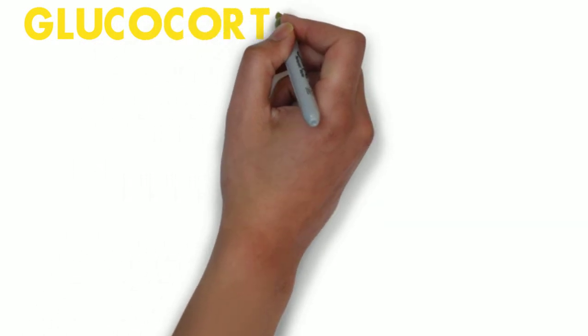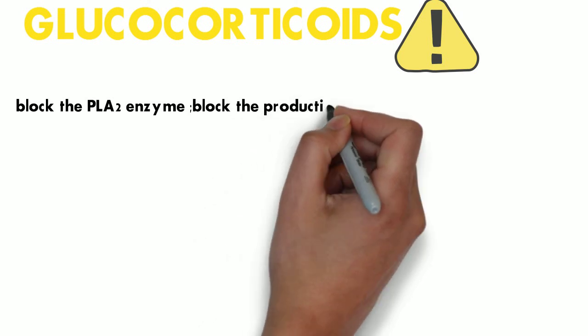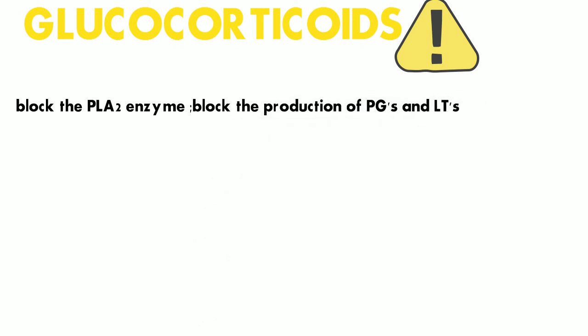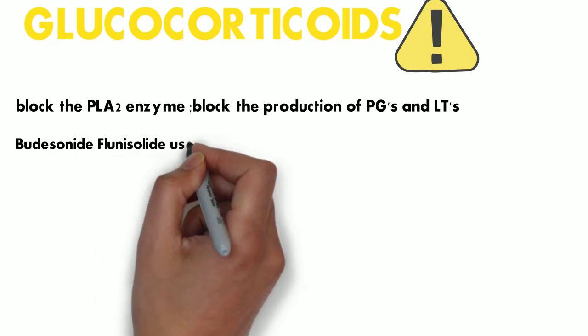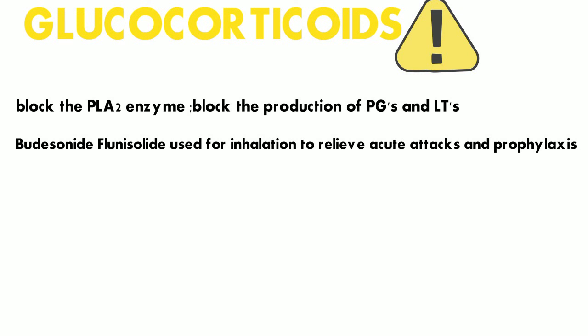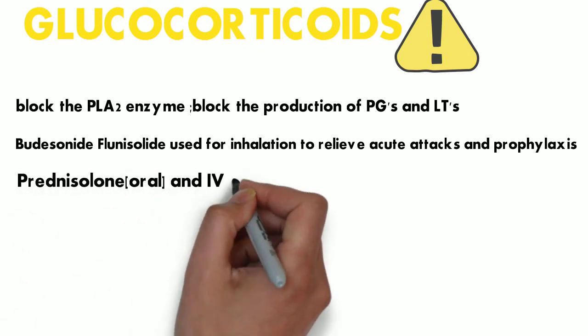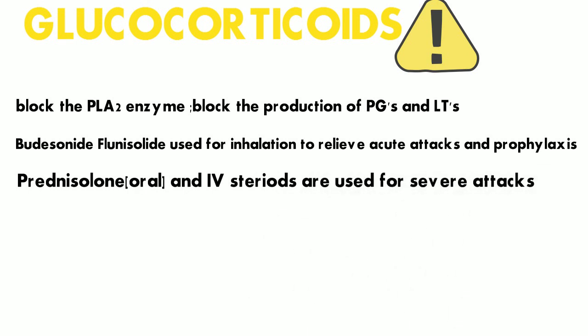Last but not the least, we have glucocorticoids. These block the phospholipase enzyme, leading to a decrease in the production of prostaglandins and leukotrienes. These include drugs like budesonide and flunisolide, which are used for inhalation to manage acute attacks. We also have prednisolone and IV steroids, which are used to manage severe attacks of asthma like status asthmaticus.